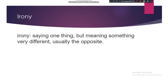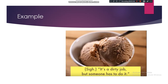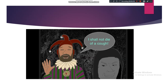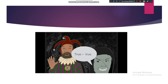Irony: saying one thing but meaning something very different, usually the opposite. Example: It's a dirty job but someone has to do it. Another kind of irony is saying one thing but meaning something that isn't the opposite, just different. Example from Edgar Allan Poe's The Cask of Amontillado: 'I shall not die of a cough.'